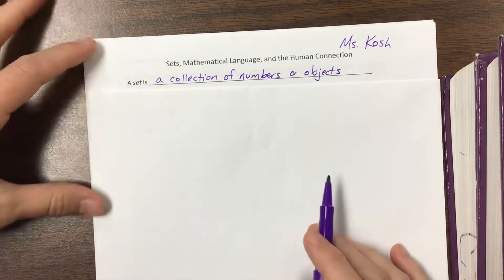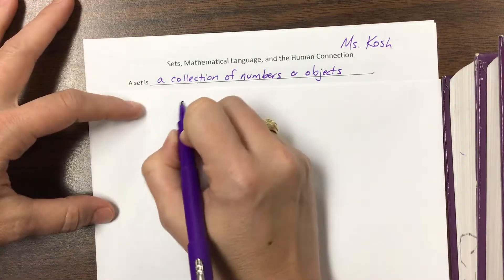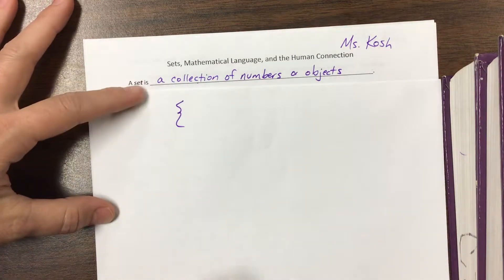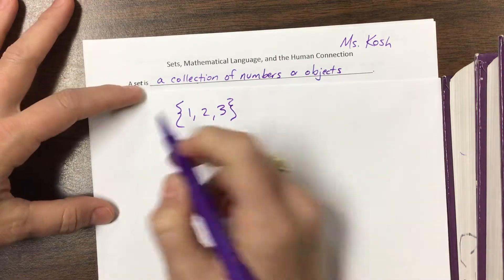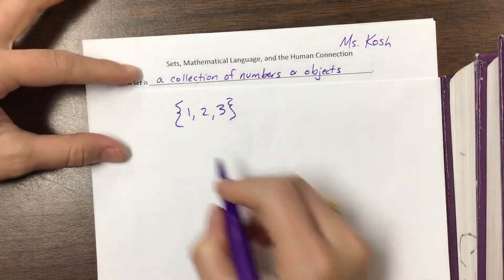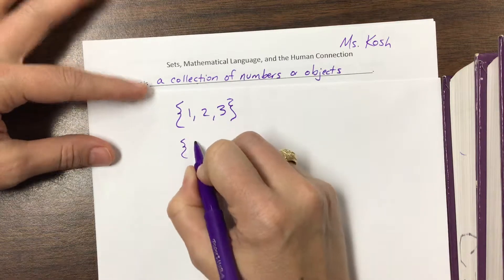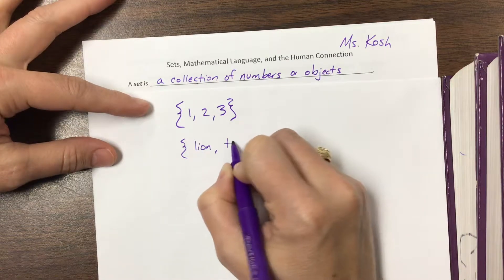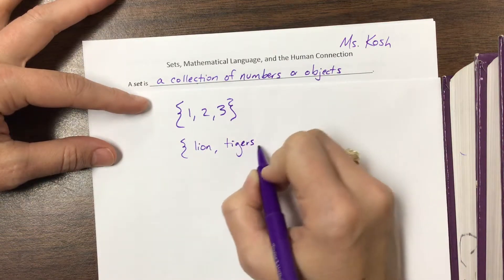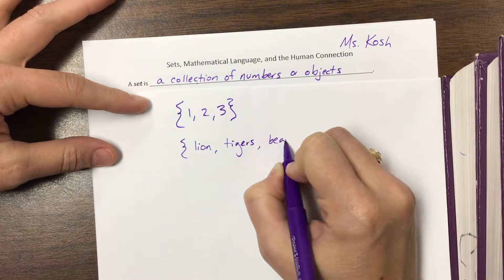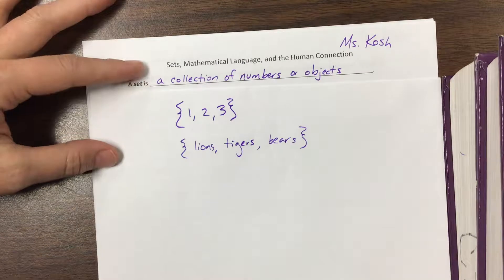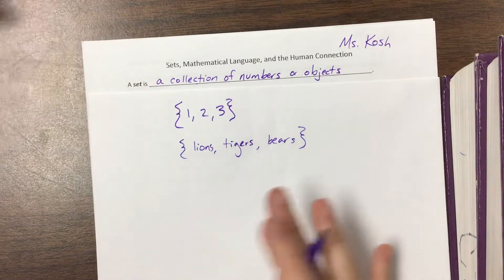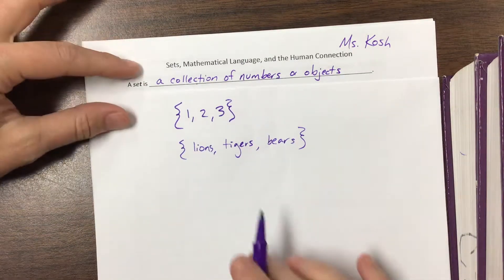So a set is just a collection of numbers or objects. Typically we write a set with brackets and we might say it's the set 1, 2, 3. That could be a set A, that could be set B, you could say it's the set of animals and we have lions, tigers, and bears. So that's now a set of animals. A set is just a collection of numbers or objects.